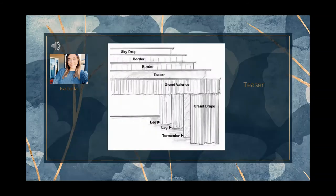A teaser is a horizontal drape across the stage designed to hide the first electric. When the grand drape rises and you see a small drape running across the top of the stage hiding that first row of lights, that is the teaser. It is typically a black or dark-colored drape, as it is not meant to draw attention. The teaser can be lowered into position to set the stage height as required by the current scene.